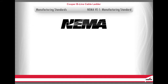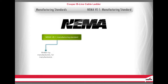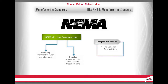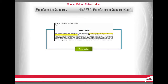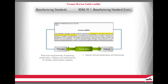Let's look at the NEMA VE-1 Manufacturing Standard. The NEMA VE-1 Manufacturing Standard was written by manufacturers for manufacturers. It specifies the requirements for metallic cable ladder systems designed for use in accordance with the rules of the Canadian Electrical Code and the National Electrical Code. The publication provides technical requirements concerning the construction, testing, and performance of metallic cable ladder systems. It defines typical nominal dimensions and tolerances, testing methods for load and electrical continuity, material definitions by the American Society for Testing and Materials, and labeling requirements.